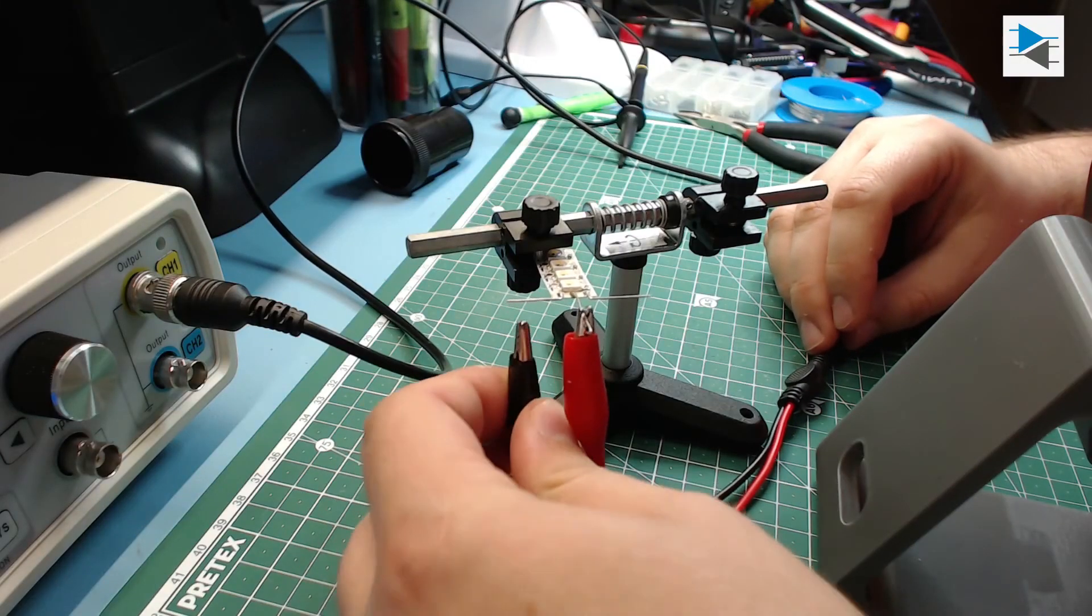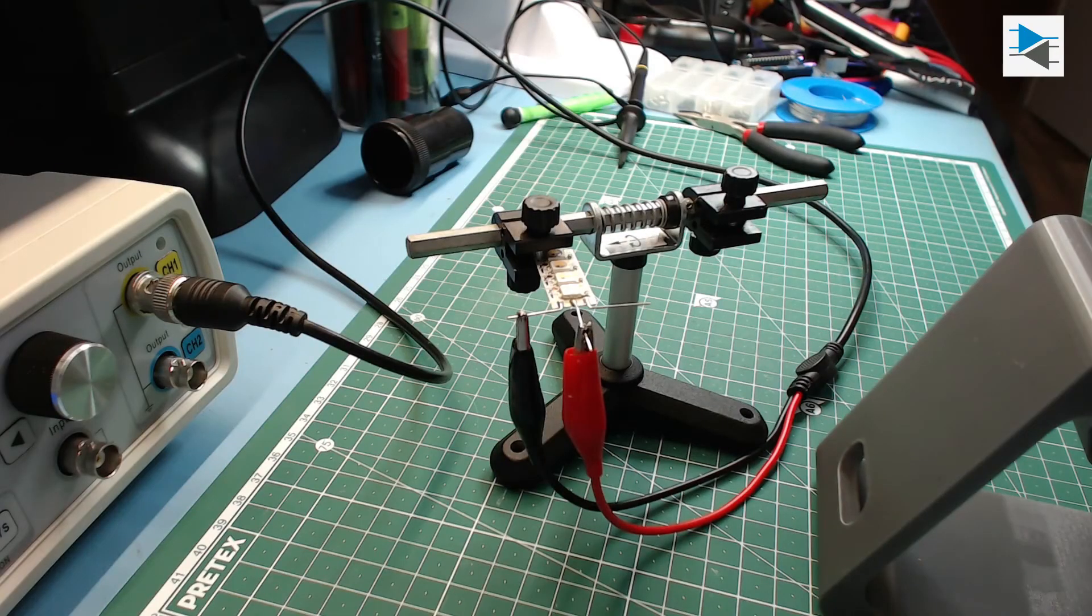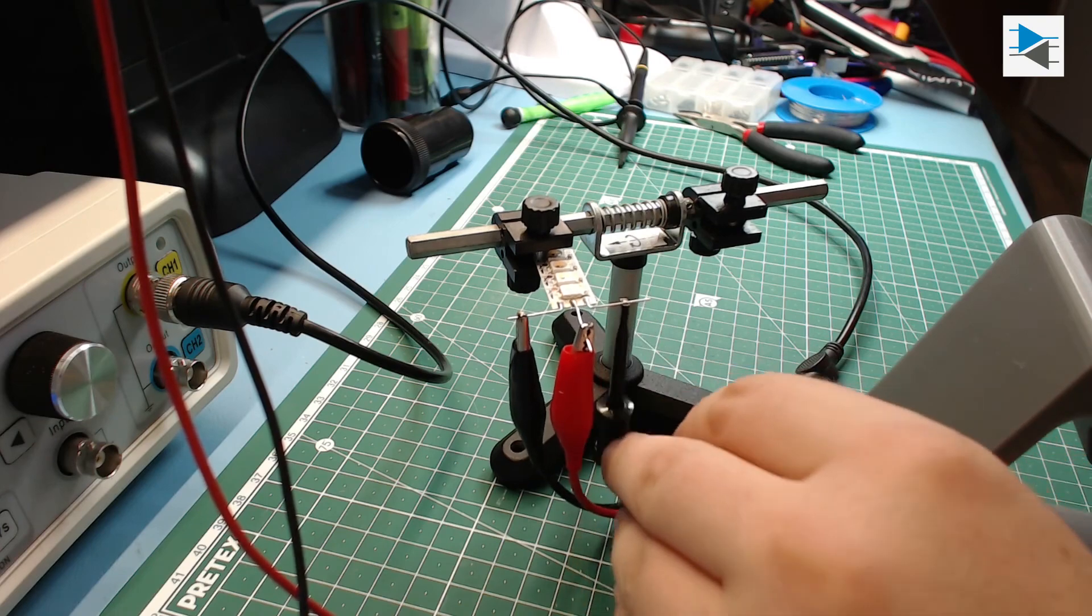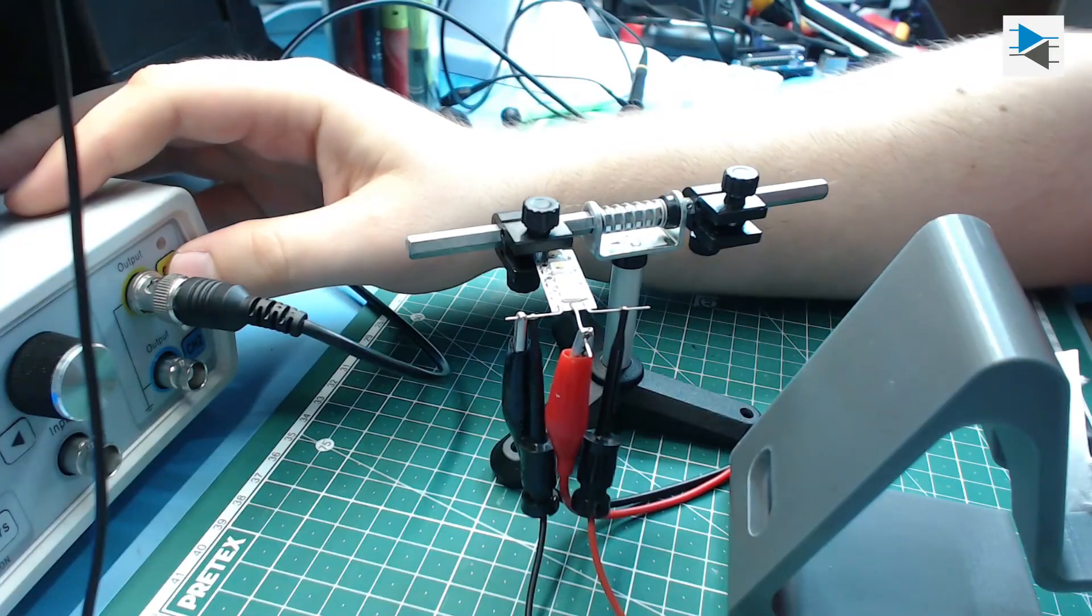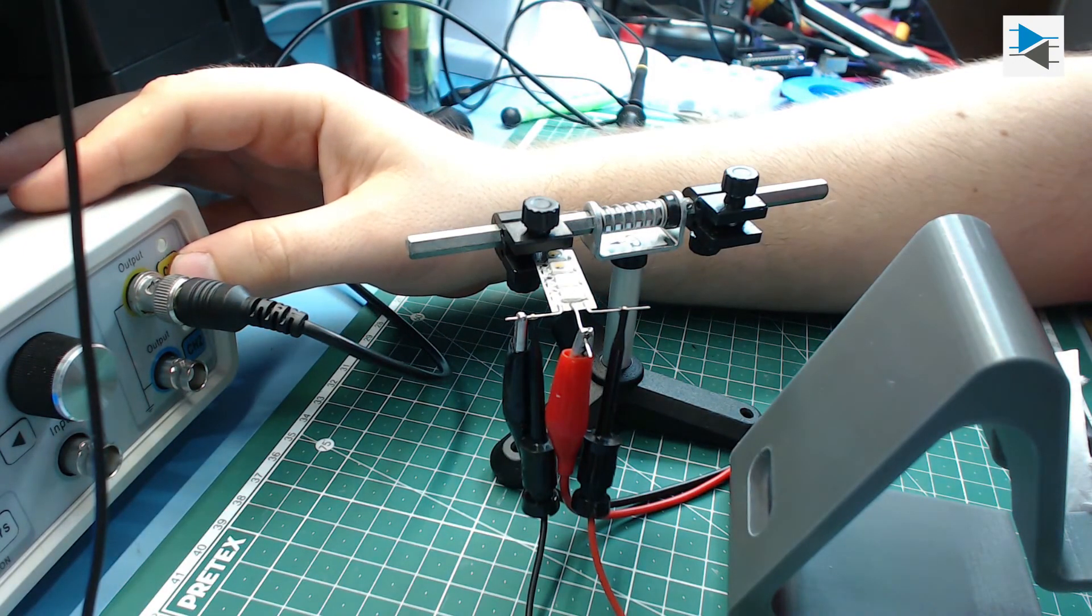All there is left to do is to connect the signal output of the function generator to the data in-pin of the LED string and also hook up the positive and negative voltage from a power supply set to 5 volts. And at last we can enable the output of the function generator.